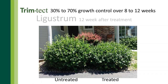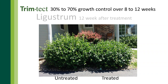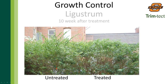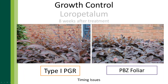Here's an example of growth control on various species. This is ligustrum — Japanese privet or wax leaf ligustrum — showing the difference between an untreated plant and a treated plant 12 weeks after application in Oklahoma. You can see we are drastically reducing the amount of internodal growth. Here is loropetalum, a very popularly planted shrub in the Southeast, showing treatment with a type 1 plant growth regulator versus an application with TrimTech — drastically reducing above-ground top growth.